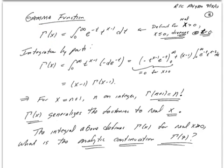If you haven't seen the gamma function before, it's actually very closely related to things you already know. If you integrate by parts, you get the relation that gamma of x equals x minus 1 times gamma of x minus 1. If you use this relation for x equals n plus 1, where n is any integer, and plug in the fact that gamma of 1 equals 1, you find that gamma of n plus 1 equals n factorial for any integer n. So gamma of x generalizes the factorial function to real values of x. The gamma function is already a continuation in that sense — it extends the factorial to an analytic function of x, though that kind of continuation is not always unique.